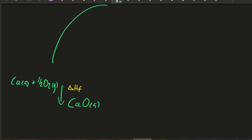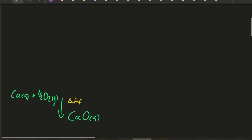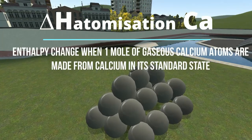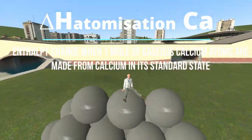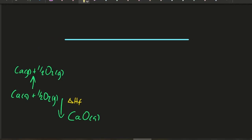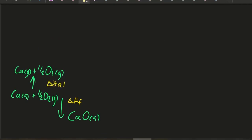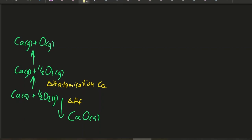Now we're going to go around the long way and come back to calcium oxide, making it step by step. First of all, we're going to atomize the calcium. Why would you want to atomize the calcium? We're going to be doing ionization energies and electron affinities, and they only work with atomized substances. So that's the enthalpy change of atomization for calcium. Now I'm going to atomize the oxygen — that's the enthalpy change of atomization of oxygen.